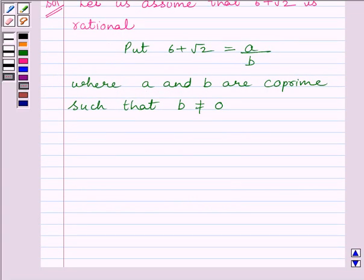Let us recall that two numbers are coprime if they have no common factor other than 1. Now we know A upon B is equal to 6 plus root 2.